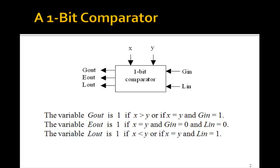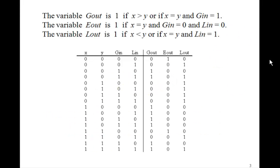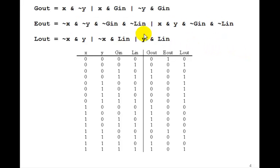You remember from the last lesson we designed this 1-bit comparator. We made this truth table and then by using Carnot maps you could get these three logic equations for Gout, Eout, and Lout. So we're going to use those to make a 1-bit comparator and then instantiate four copies of it.